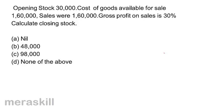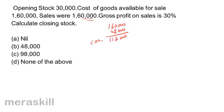Sales is 1,60,000. Gross profit on sales is 30%. Therefore, cost of goods sold is 1,60,000 minus 48,000, that's 1,12,000. This is the cost of goods sold.